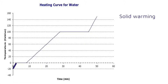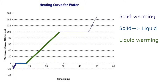The first section is when the solid is warming. As this is the heating curve for water, this section will show ice warming as heat is added. In the second section, the substance's melting point is reached and the solid changes to a liquid. For this curve, the ice is melting at 0 degrees Celsius and becoming water.